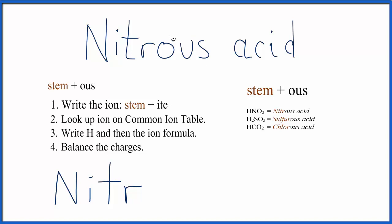Next we'll take the OUS and replace it with ite. This means we'll have the nitrite ion and we can look this up on the common ion table.